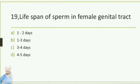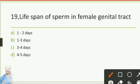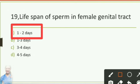Lifespan of sperm in female genital tract: option A 1 to 2 days, option B 1 to 3 days, option C 3 to 4 days, option D 4 to 5 days. The answer is option A, 1 to 2 days.